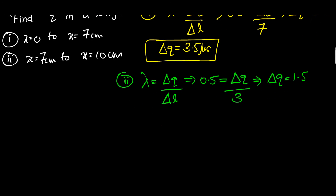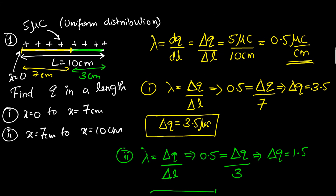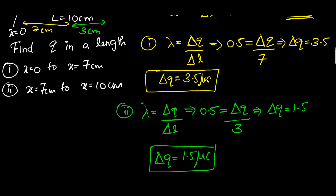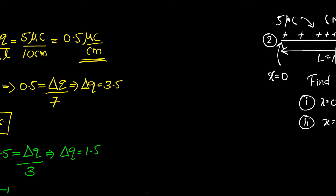Another way to find this second charge is by subtraction: the total charge is 5 microcoulombs, and we already found 3.5 in the first section, so the remaining must be 1.5 microcoulombs. These two values add up to 5. That was easy because it was a uniform distribution with a constant λ. But now I have a better problem for you.